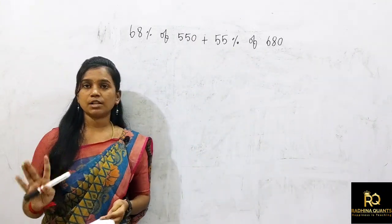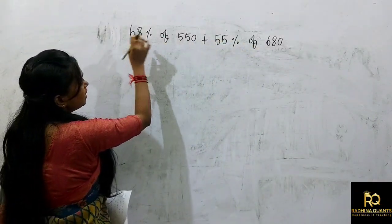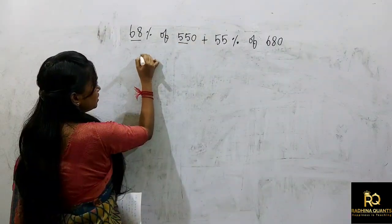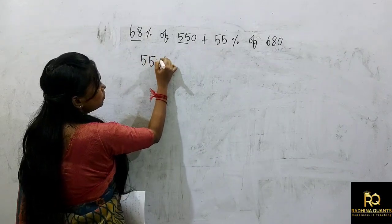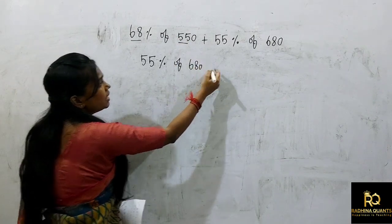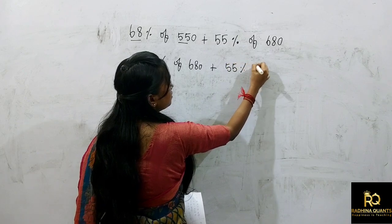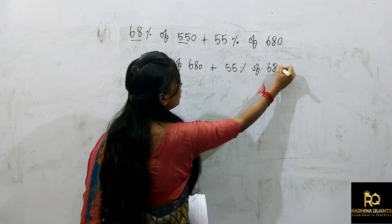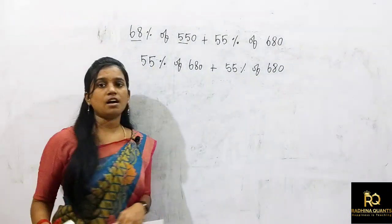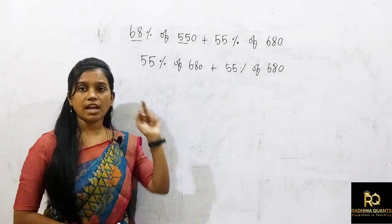How do we figure it out? In the second term, what do you do in the first term? We're going to interchange 68 and 55 — as we explained in the previous video. Let's look at 55% of 680. This is 55% of 680. Now we'll calculate: 55% of 680. You can calculate it.